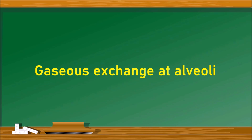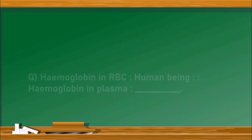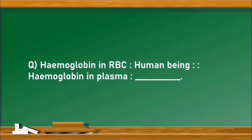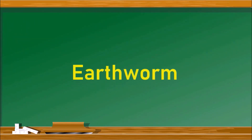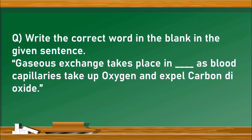Analogy: hemoglobin in RBC is to human beings as hemoglobin in plasma is to what? In human beings, hemoglobin is present in red blood cells, whereas in some animals hemoglobin is dissolved in plasma with no blood cells. That organism is the earthworm or annelids.